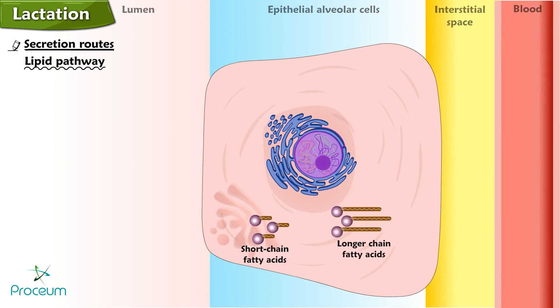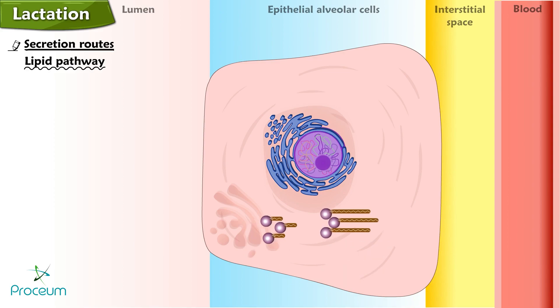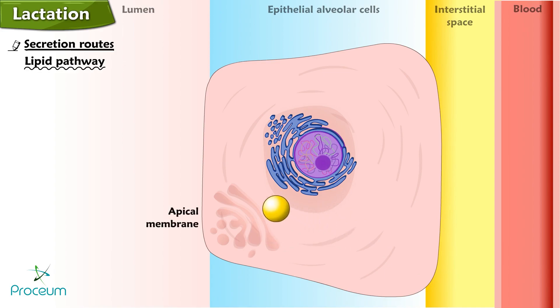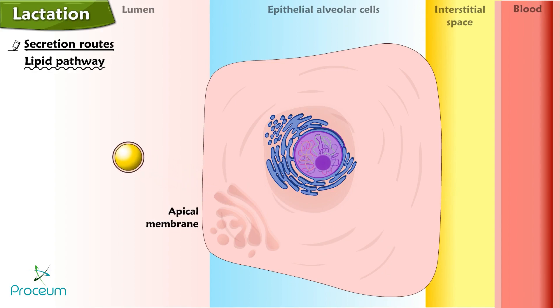In the lipid pathway, epithelial cells synthesize short-chain fatty acids; however, the longer-chain fatty acids greater than 16 carbons that predominate in milk originate primarily from the diet or from fat stores. The fatty acids form into lipid droplets and move to the apical membrane. As the apical membrane surrounds the droplets and pinches off, it secretes the milk lipids into the lumen in a membrane-bound sac.